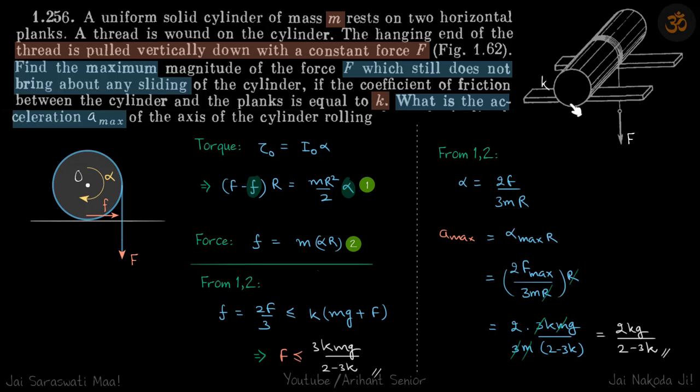So the friction will act forward—the direction of friction is going to be forward. Now we need to find the force at which there is no sliding, so let's have a case of typical pure rolling and then we can put the limiting value of F.